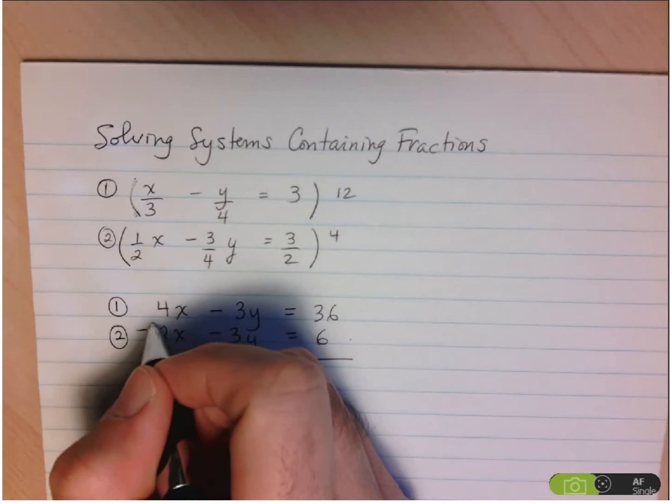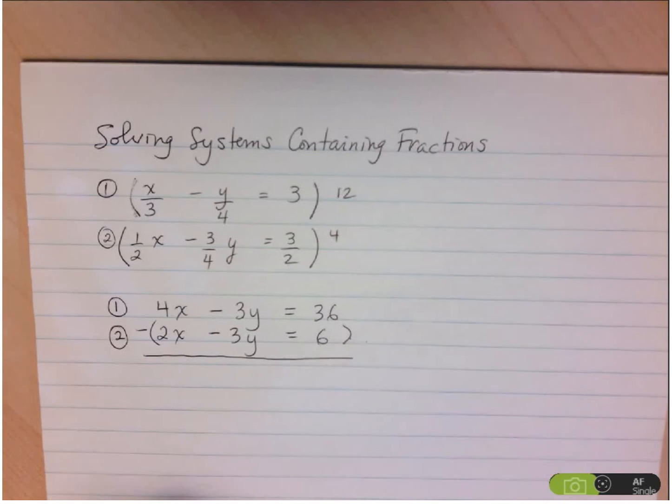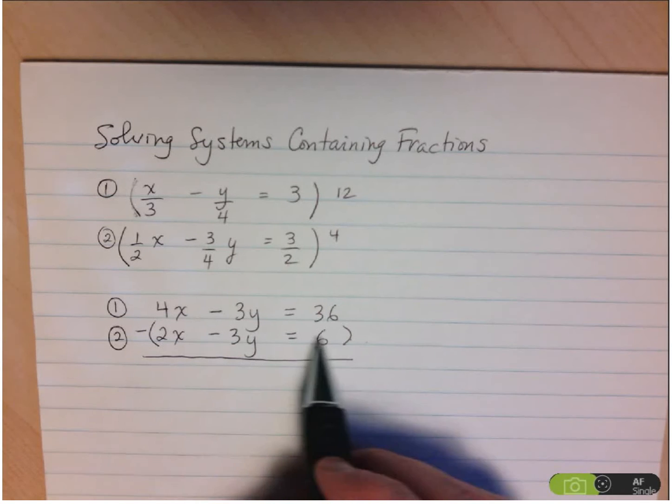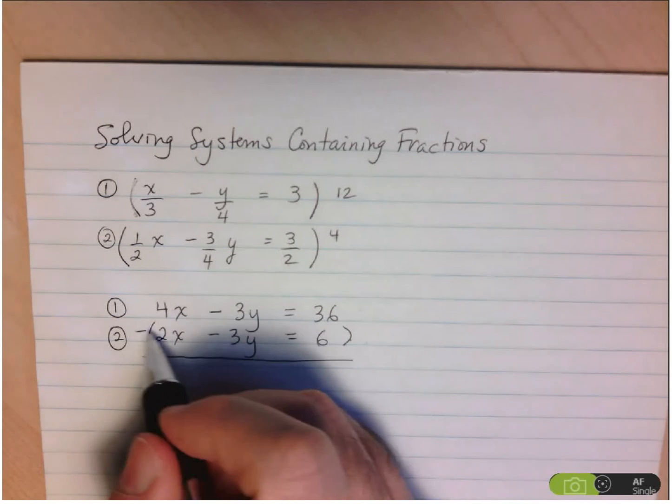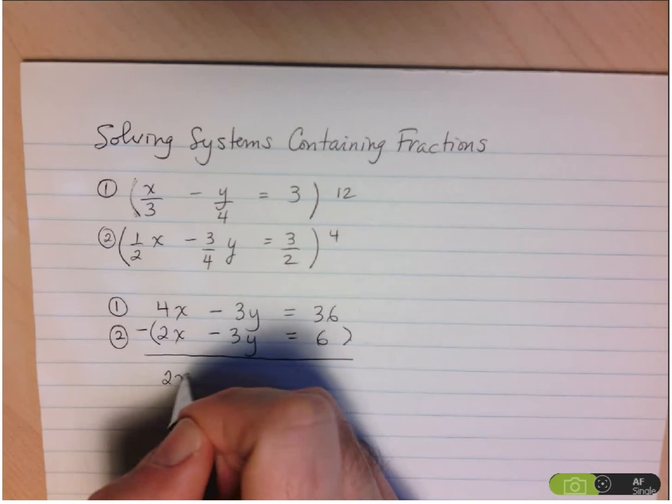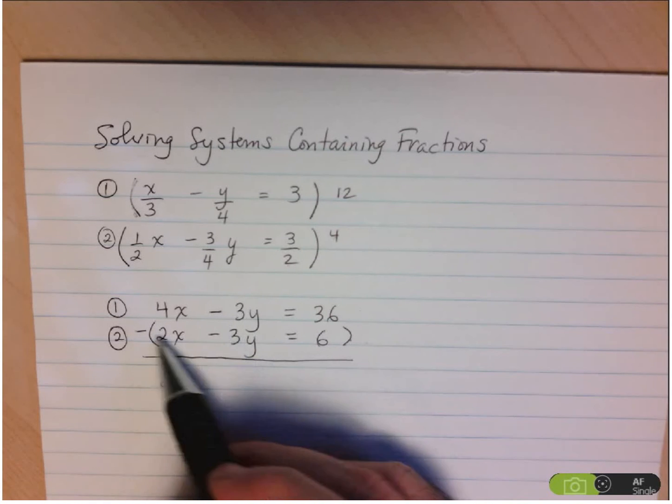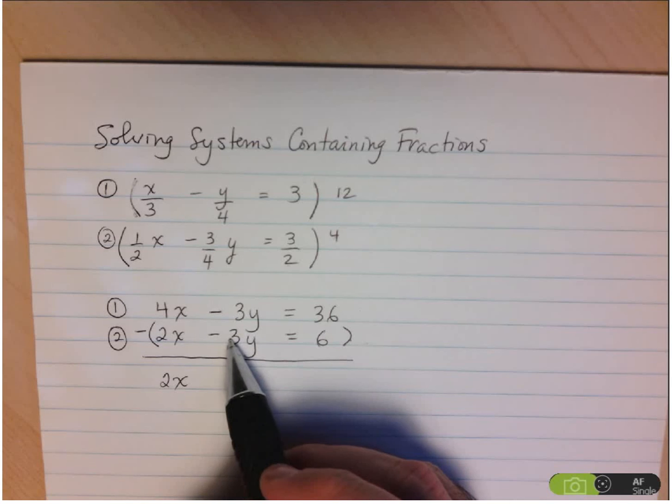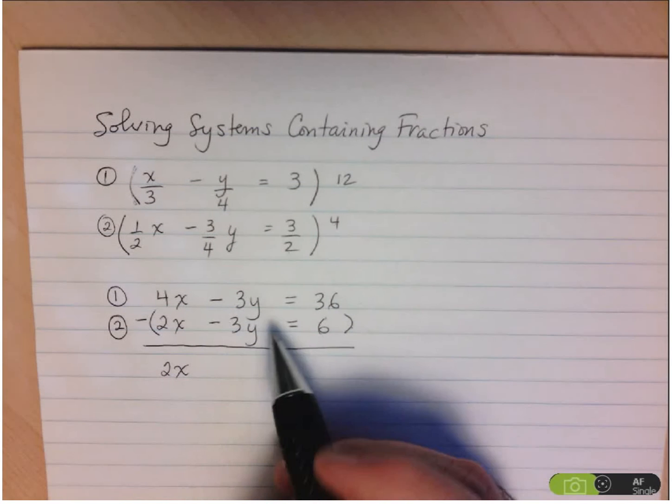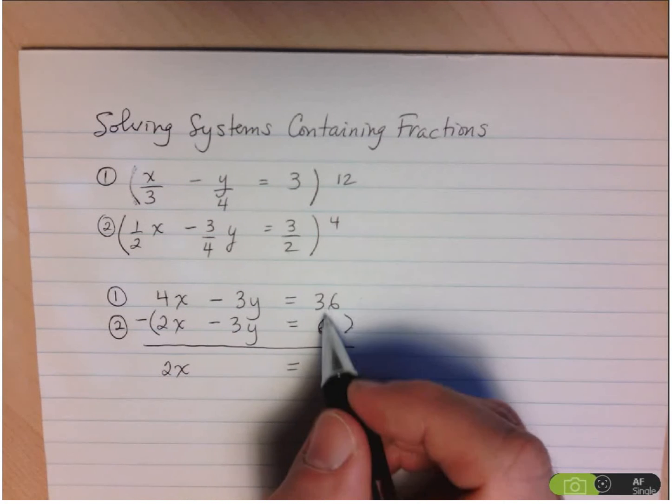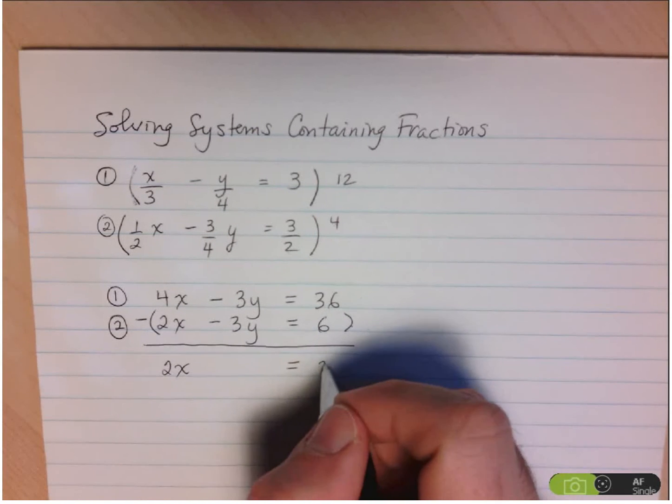So again, don't forget, put your brackets around the second equation just to make sure you remember to subtract all terms. So here we have 4x minus 2x, there's 2x. Here we have negative 3 minus negative 3, or negative 3 plus 3y. So that's equal to 0. So we've eliminated the y variable, and here 36 minus 6 is equal to 30.